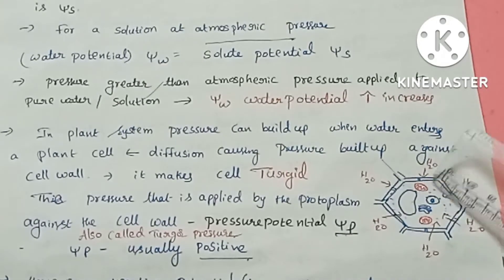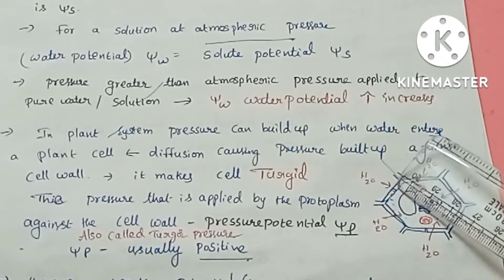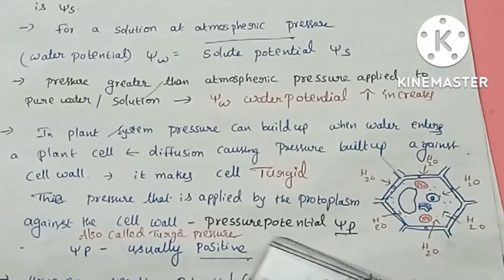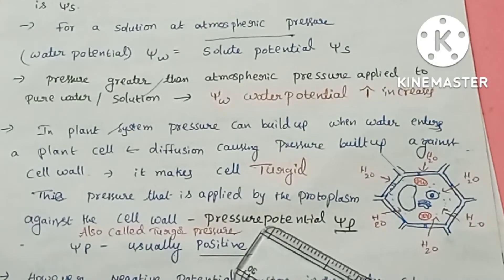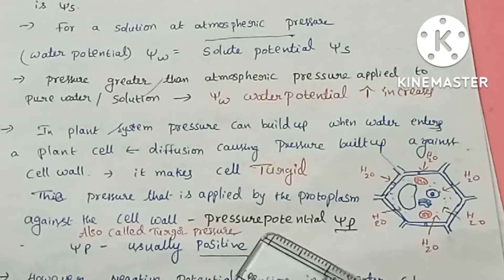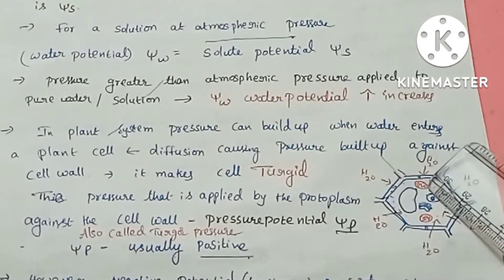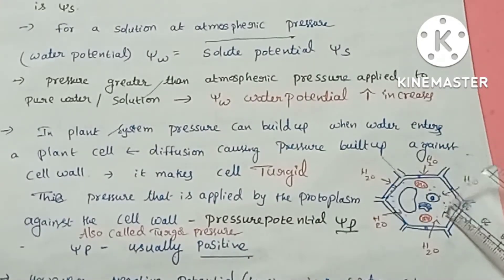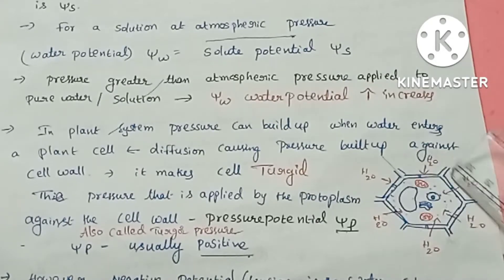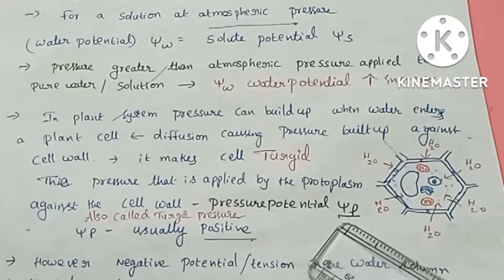When protoplasm pushes against the cell wall, the pressure applied by the protoplasm against the cell wall is called pressure potential, and it is denoted by psi-P (ψP).